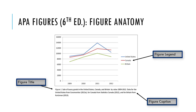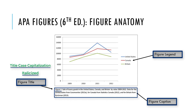The figure title is located at the bottom of the figure. It is italicized and uses title case capitalization. Like tables, figures are numbered in the order that they appear in your manuscript. The figure caption explains the figure concisely but with enough detail for the reader to understand what is presented. The figure legend serves as the figure's key to help the reader understand the data being displayed.